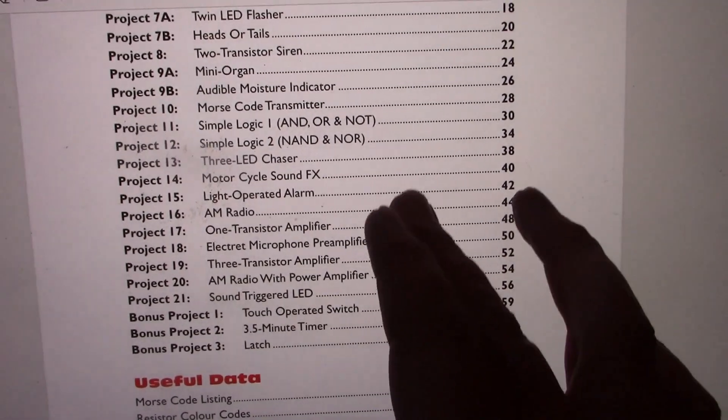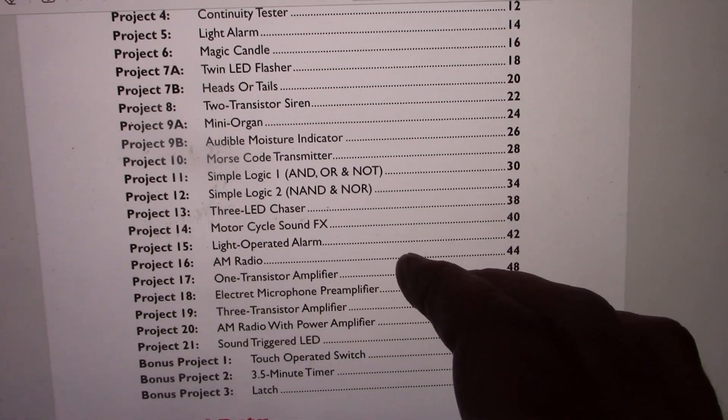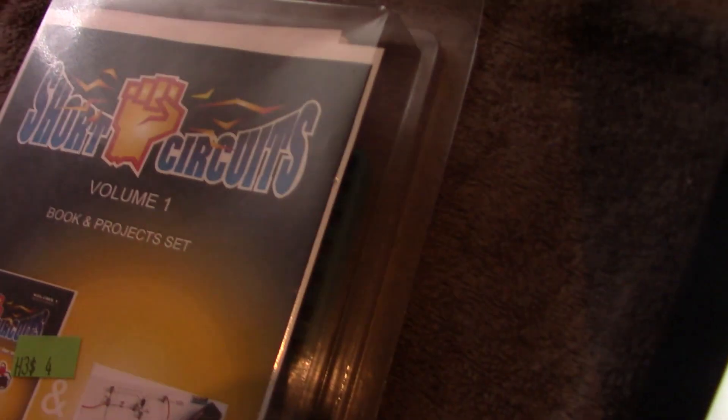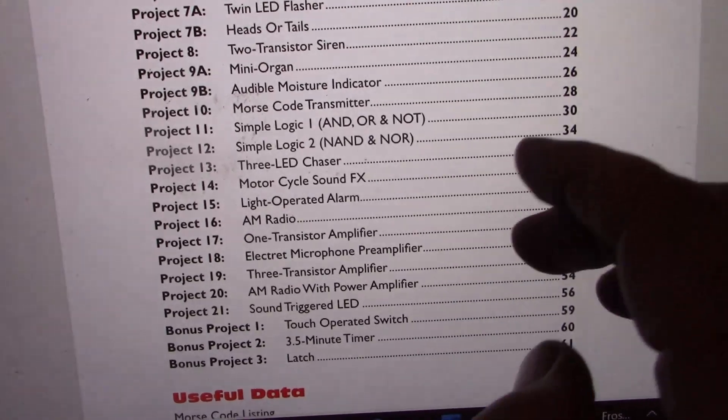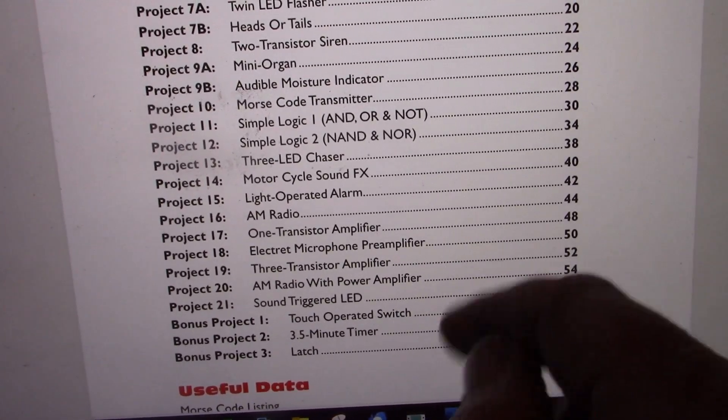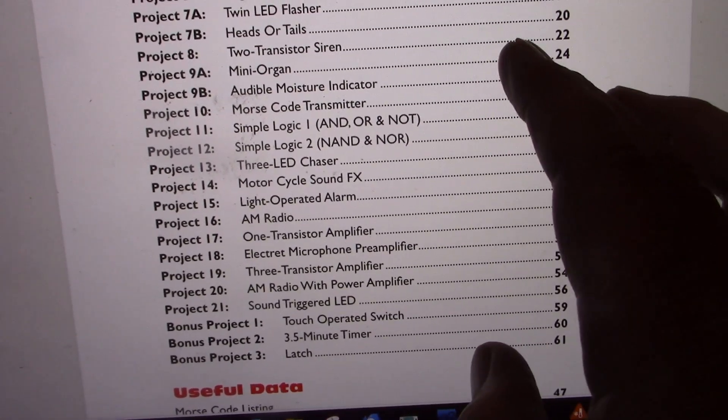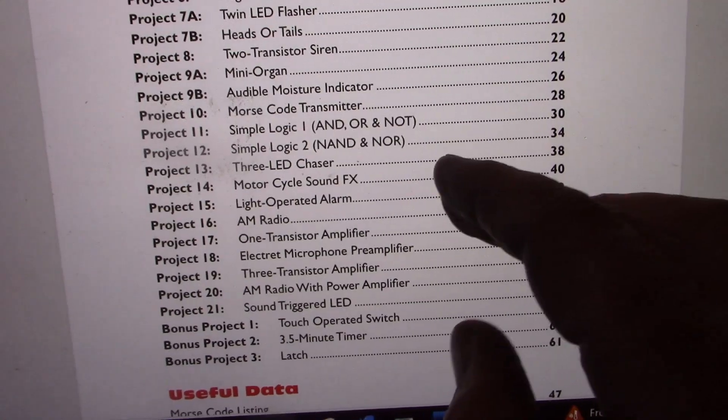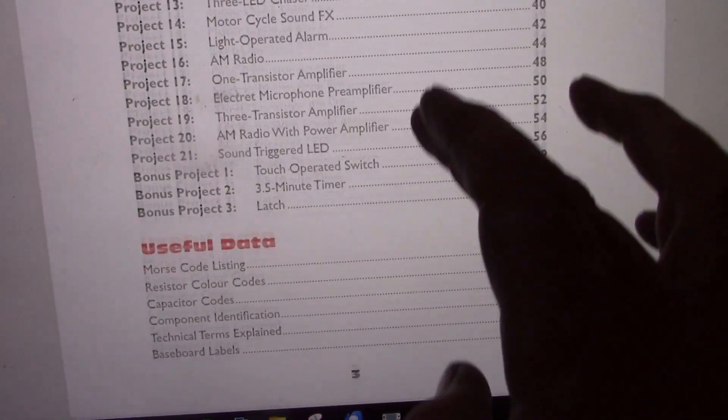Another thing with Short Circuits is that with the project kit, everything is in the one package. Whereas with Dick Smith you had kits for projects 1 to 10 and then 11 to 20. So that's how they could start off with fewer components just in the 1 to 10 and then you'd get the extra parts just to split up the cost.